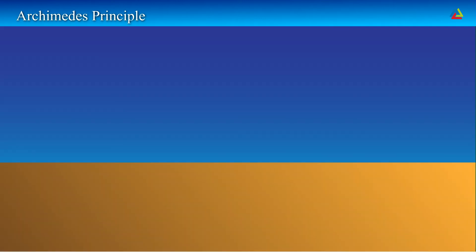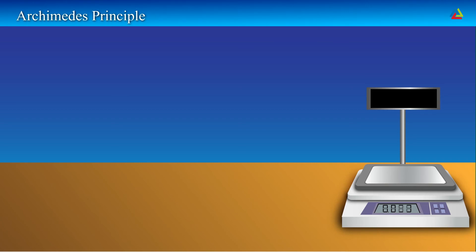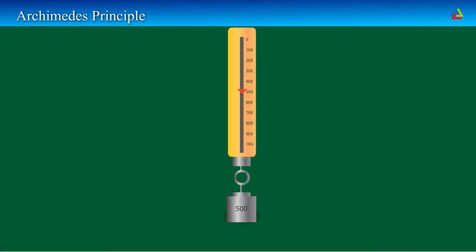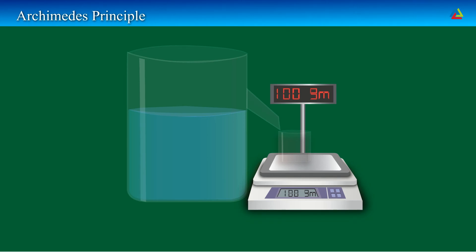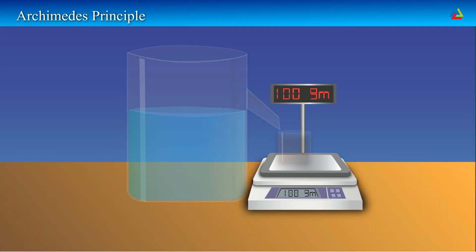For this activity we will require one iron block weighing 500 grams, a spring balance, an overflow jar, a small size beaker, and a weighing scale. First, suspend the iron block to the spring balance. It measures 500 grams. Take an overflow jar and fill it with water unless it is on the verge of overflowing. Under the overflow jar, place a small beaker. Note down the weight of the small beaker. It weighs 100 grams.